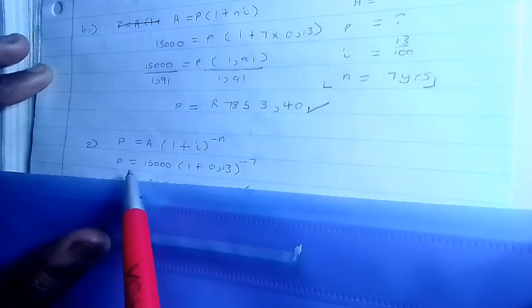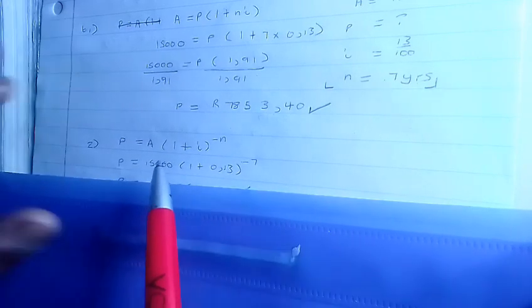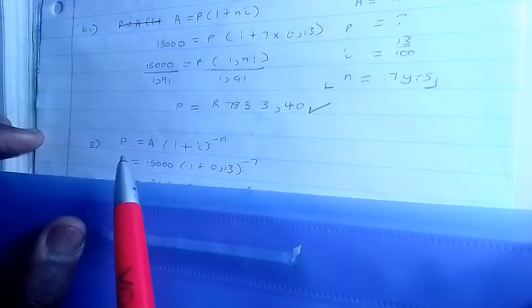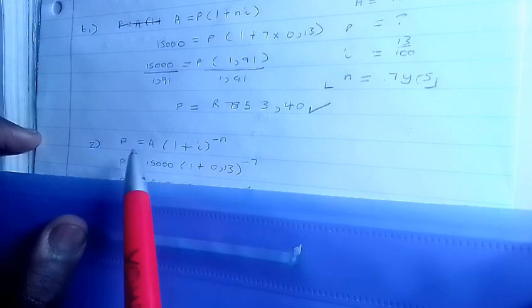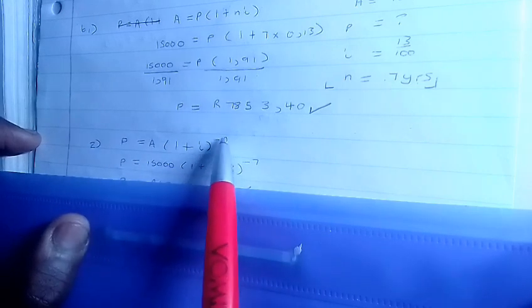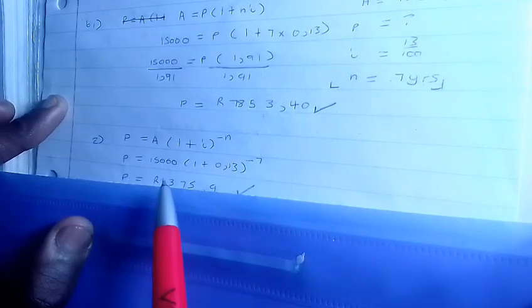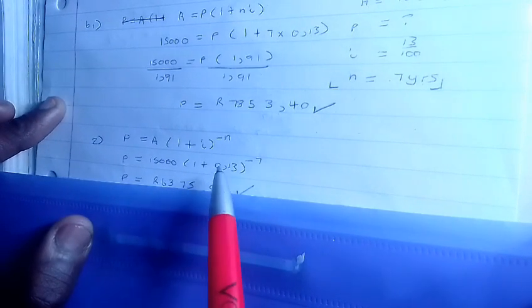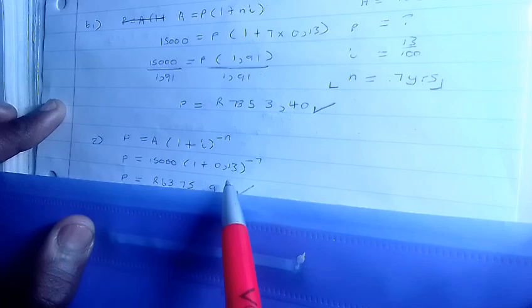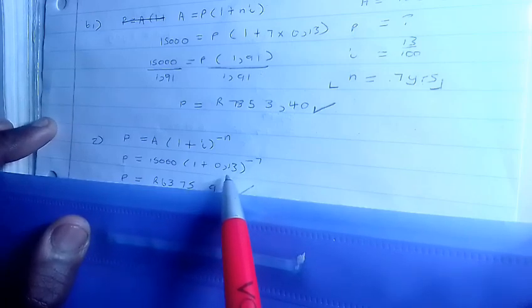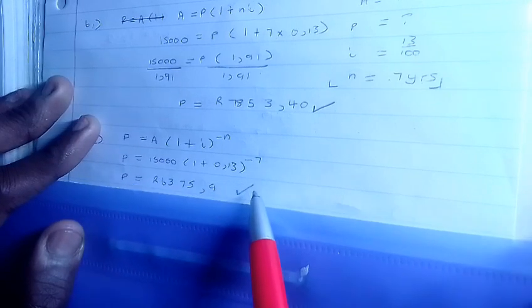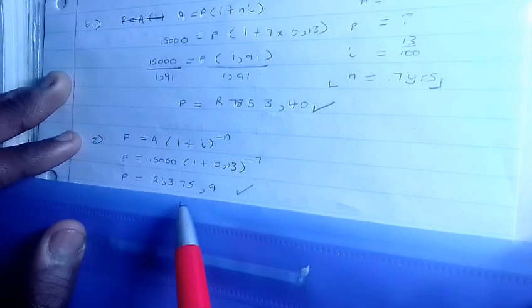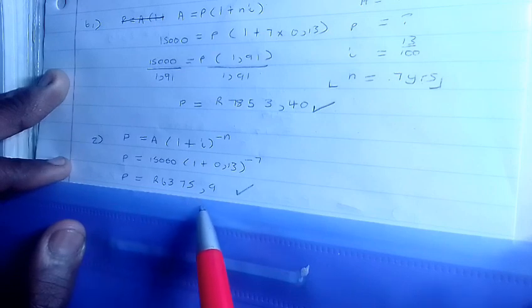So it's 15000(1 + 0.13)^(-7). Since we swap A and P to the other sides, this has to be a negative exponent. 15000(1 + 0.13)^(-7) will give you an answer of 6275.9.